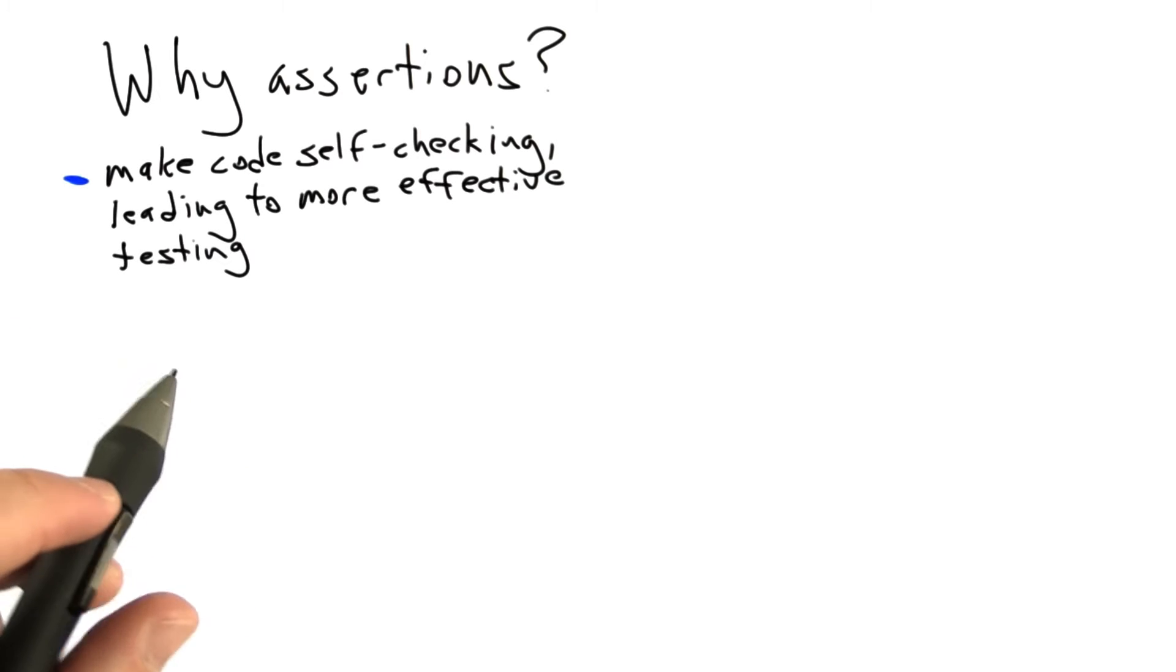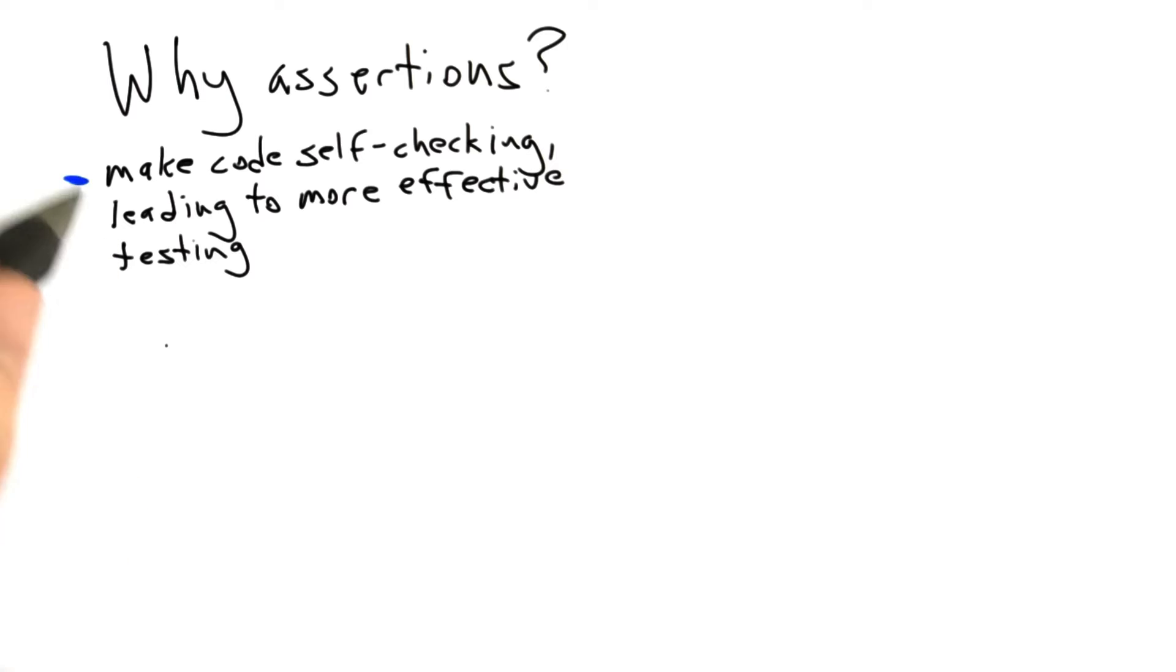So first, assertions make code self-checking. That is, they make the code that you write fail proactively when something's wrong, and this can lead to more effective testing.